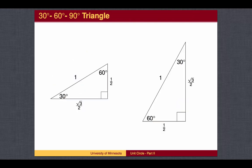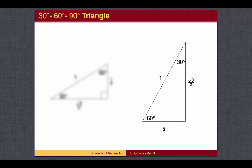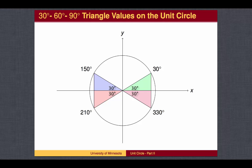The 30-60-90 triangle has one leg with length 1 half, and the other leg with length square root of 3 over 2. This triangle can be oriented in two ways: with the long side on the x-axis and the short side up, or with the short side on the x-axis and the long side up. Let's begin with the long side on the x-axis, so the four angles will be 30 degrees, 30 degrees back from 180 degrees which is 150, 30 degrees forward from 180 which is 210, and 30 degrees back from 360 which is 330.